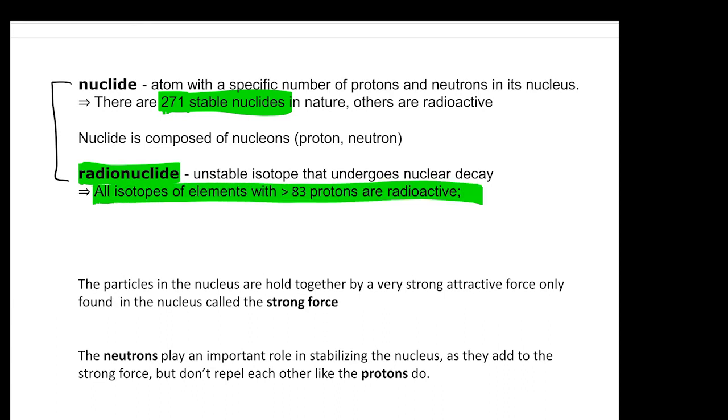If you have a number of protons larger than 83, it will be radionuclei. It means actually it is not stable. It's actually very easy to see why it is not stable. An atom is actually a very, very small particle.